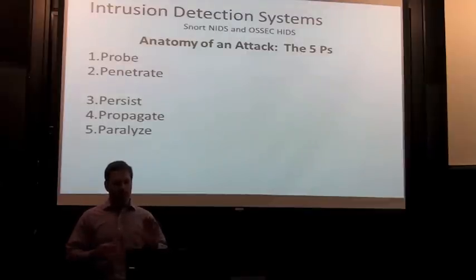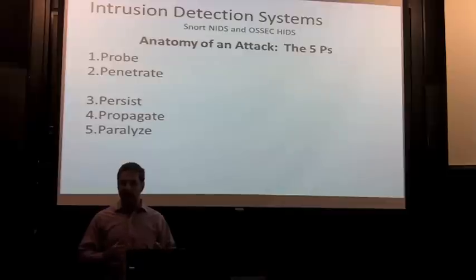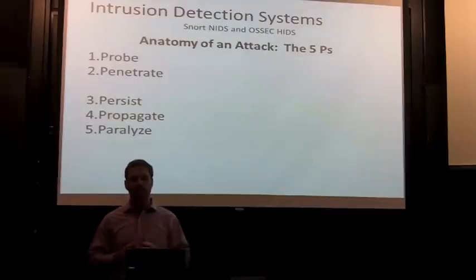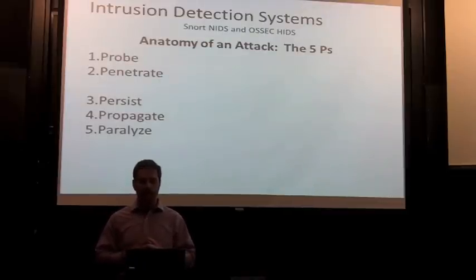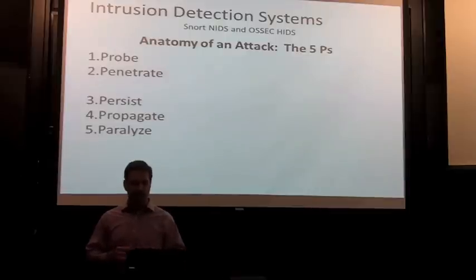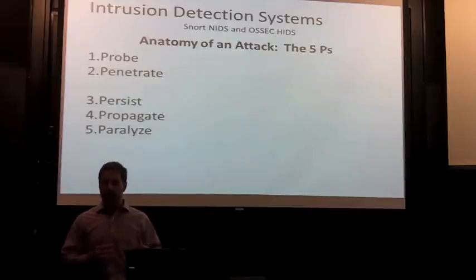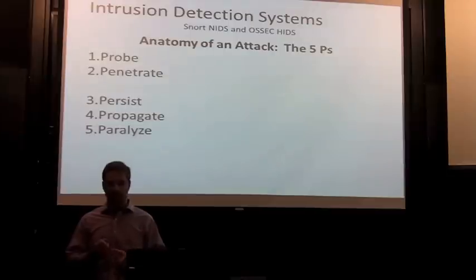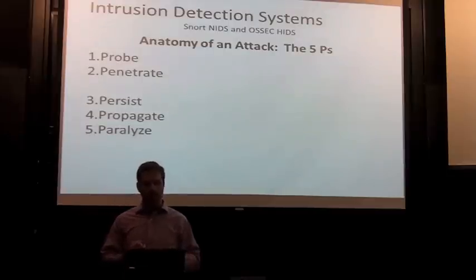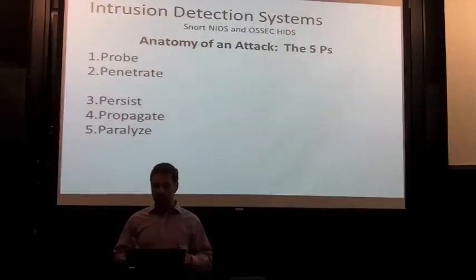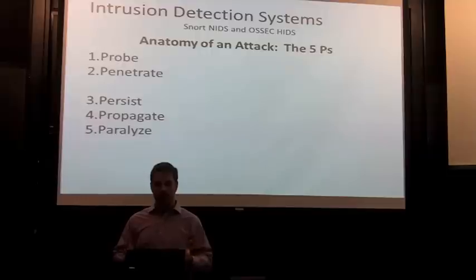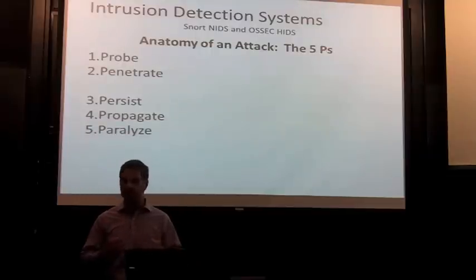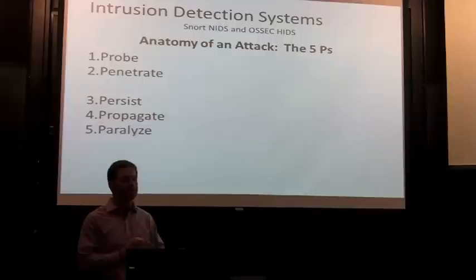I found this model in an O'Reilly book from 2004. It outlines the anatomy of an attack using the five Ps. The model is a little dated but still pretty relevant. The first step is to probe a network — probing could be something like a port scan, a social engineering attempt, dumpster diving — very basic network recon used to make an entrance into your system.